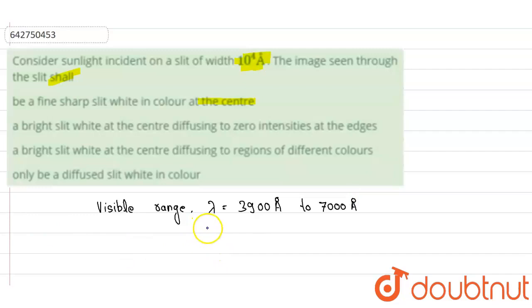The width of the slit can be written as a, which equals 10 to the power 4 angstrom, or 10,000 angstroms. You can see this 10,000 angstrom is greater than the visible range.